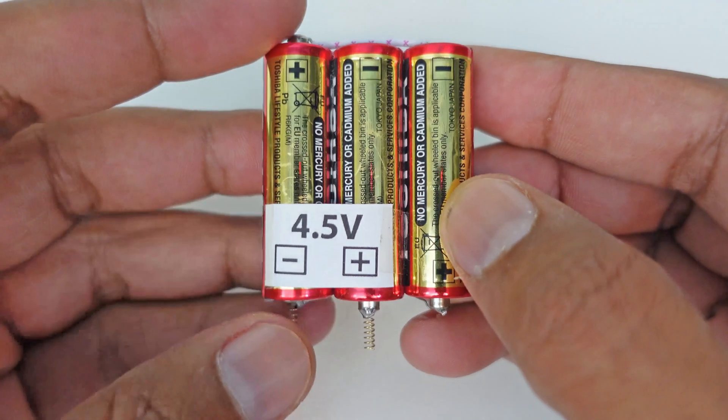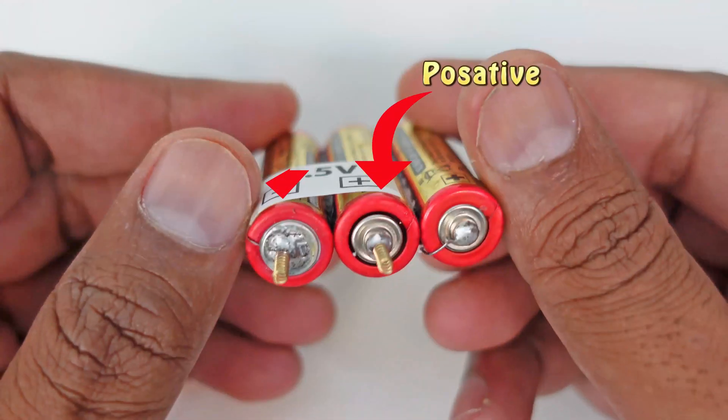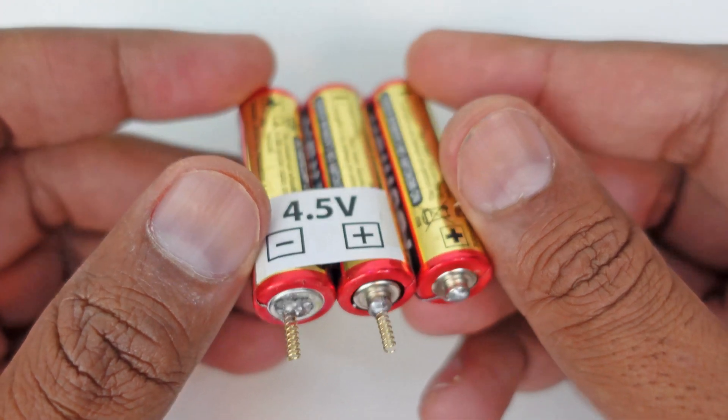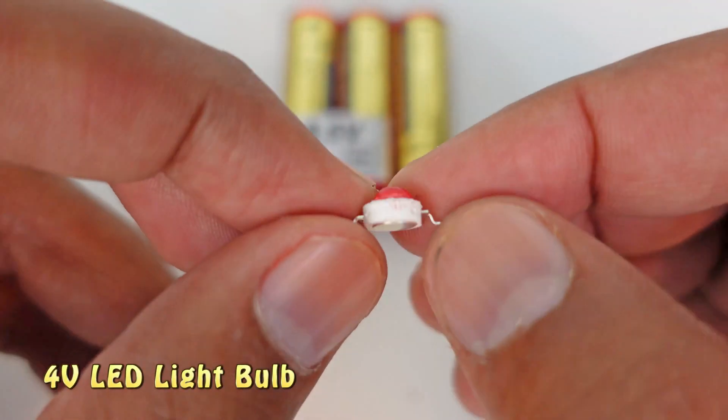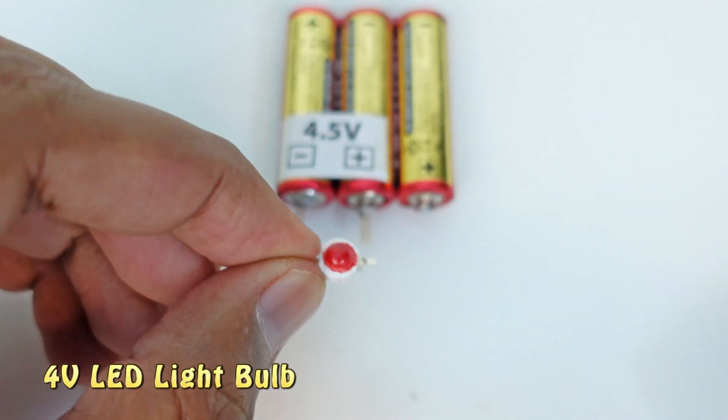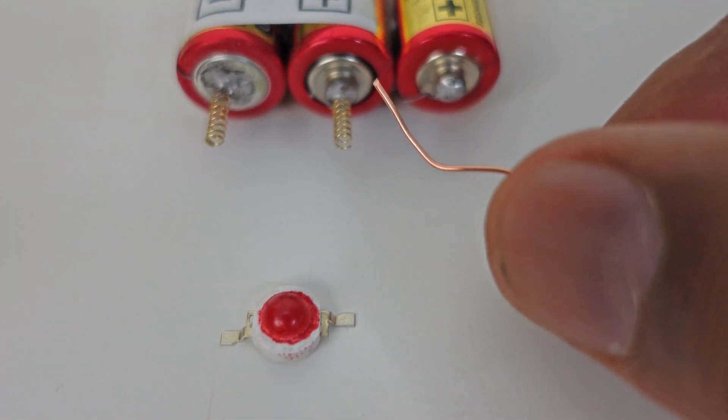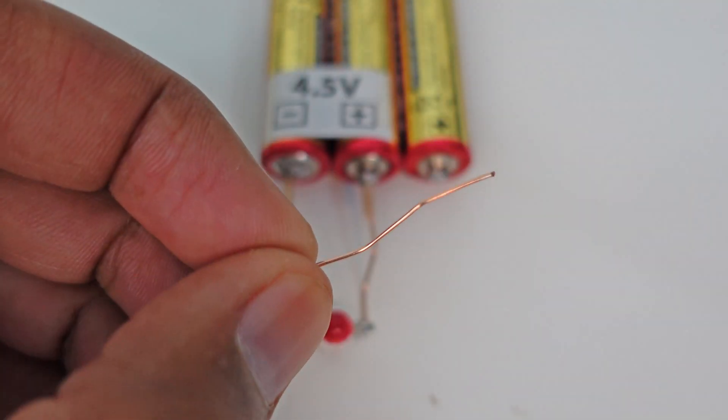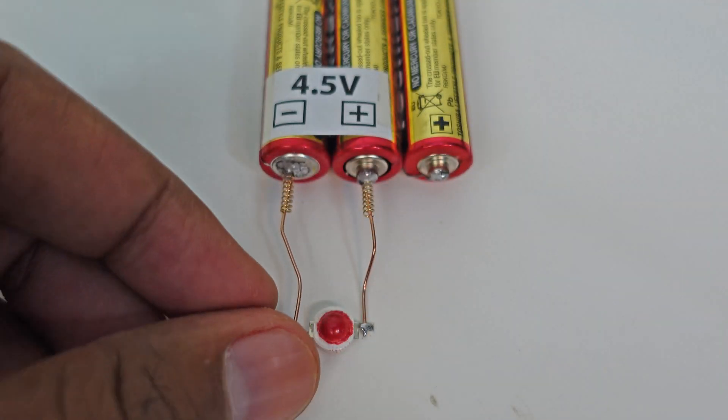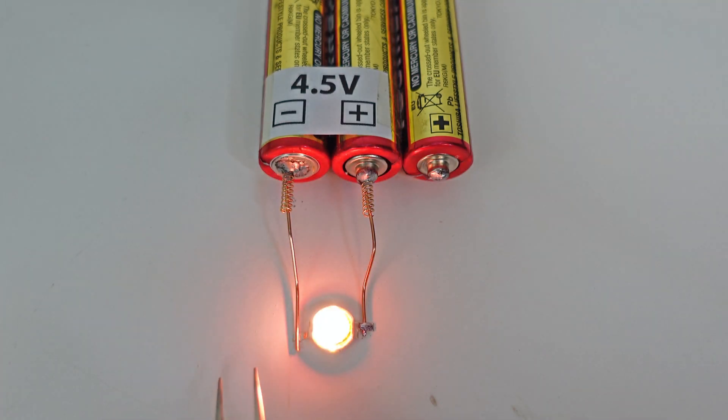As you can see we have three battery cells in series which have total 4.5 volts and positive and negative connections are coming out of it. This is a LED light. We place this light right in front of these battery cells. Now we connect the wire from the positive of the battery to the positive of the LED light and connect the wire from the negative of the battery to the negative of the LED. The LED light lights up as the circuit is complete which is usual.